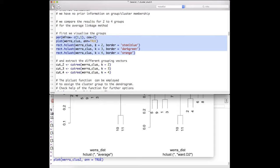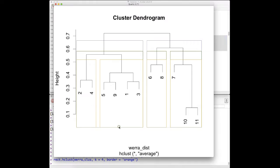For k equals 2, the two blue squares indicate the two resulting groups. With k equals 3, the green groups are indicated — one group, and then 6, 8, 7, 10, 11 would be one group. With yellow indicating four groups, these would be groups 2 and 4; then 9, 1, 3; then 6, 8; and 7, 10, 11.